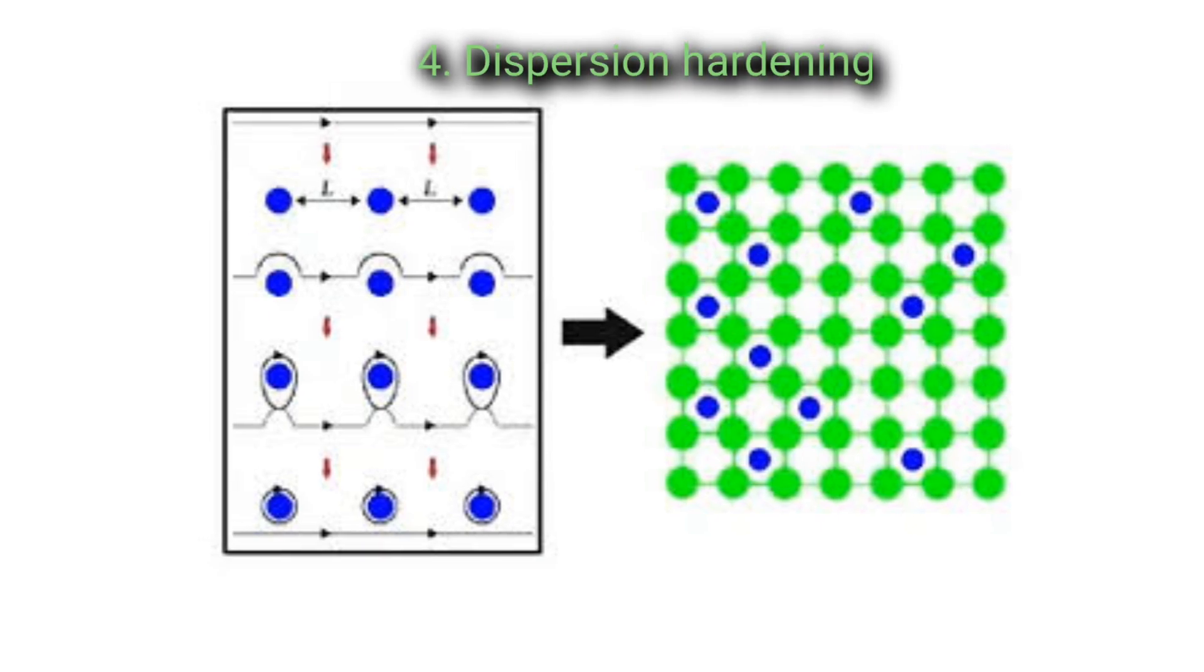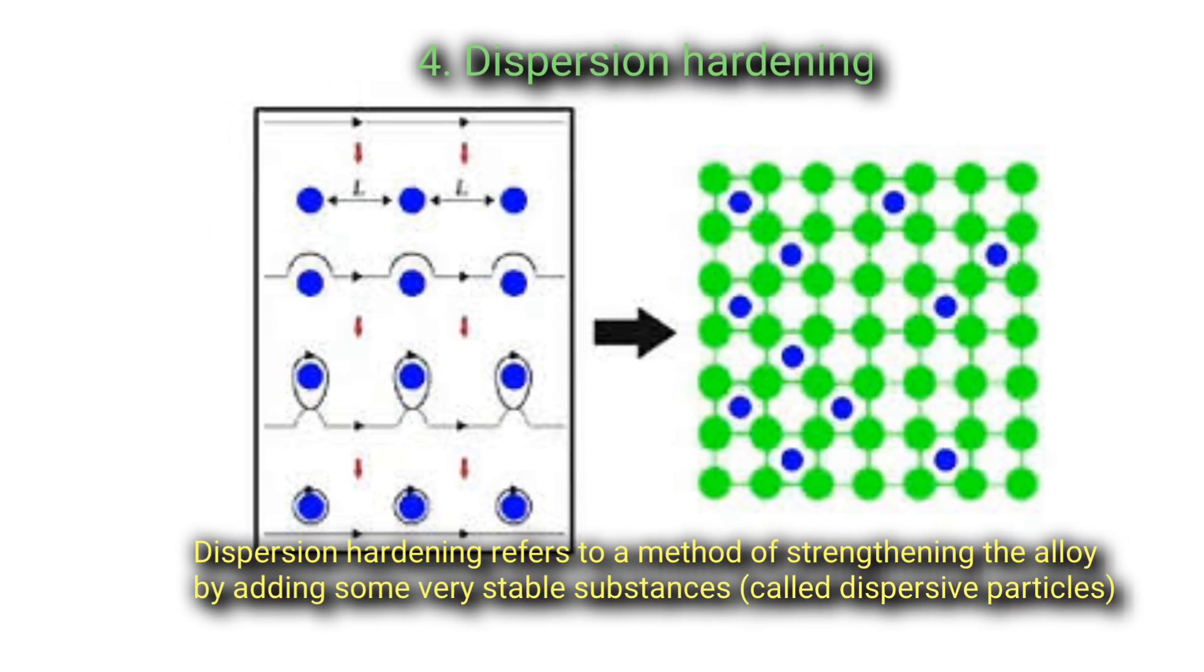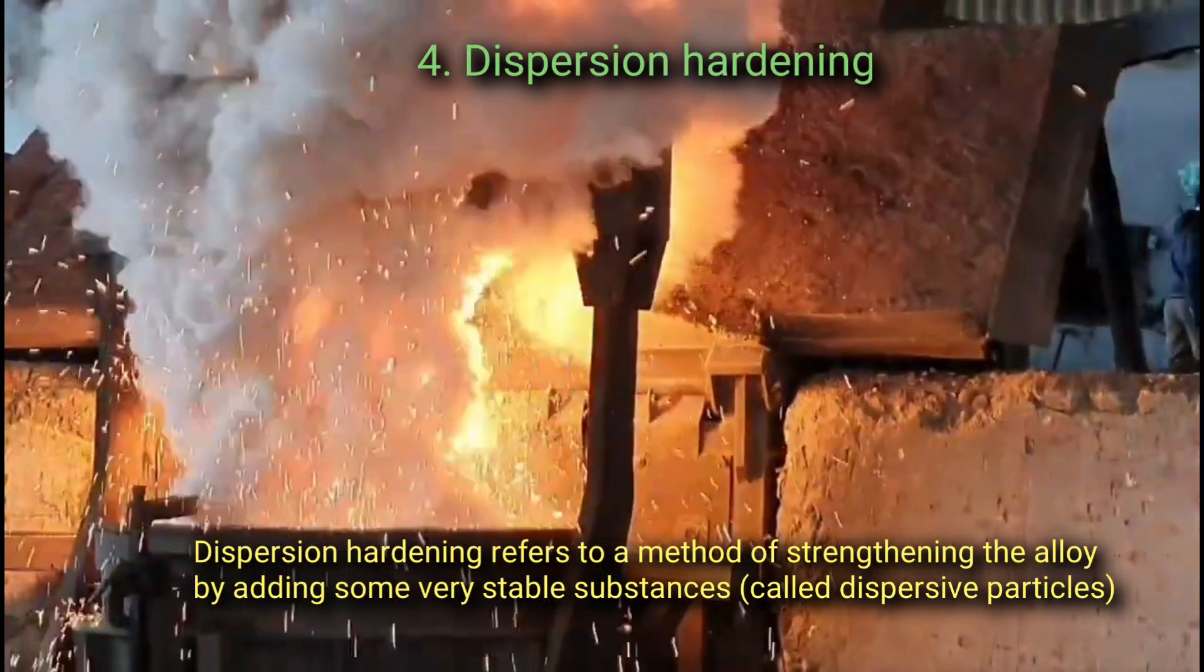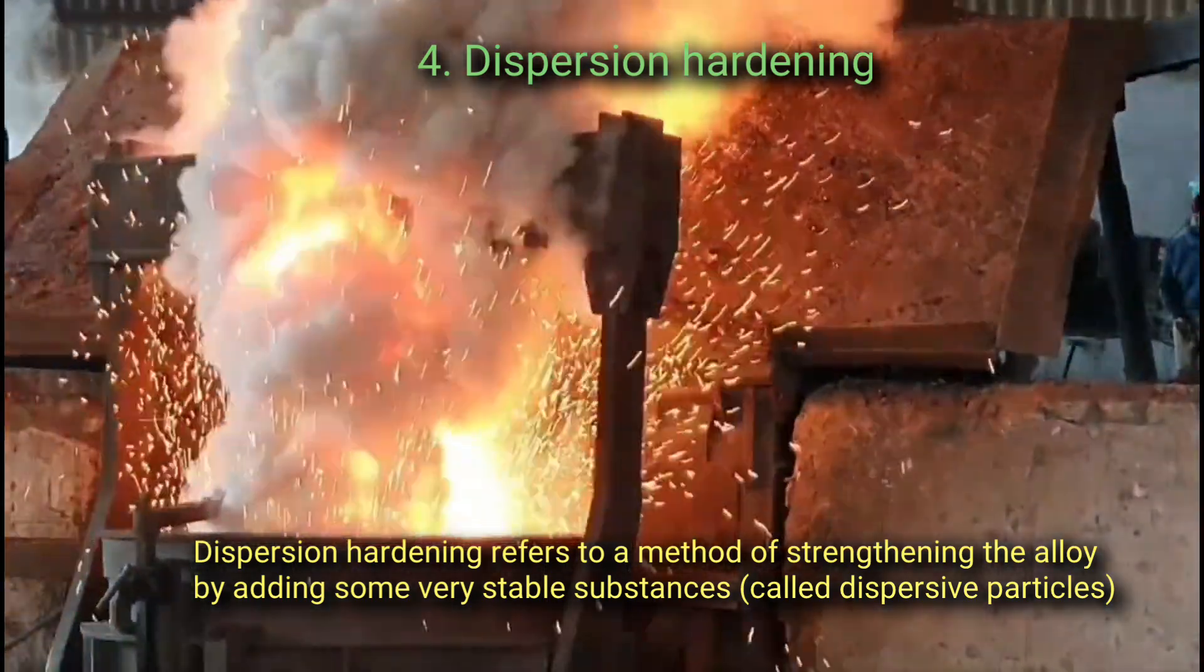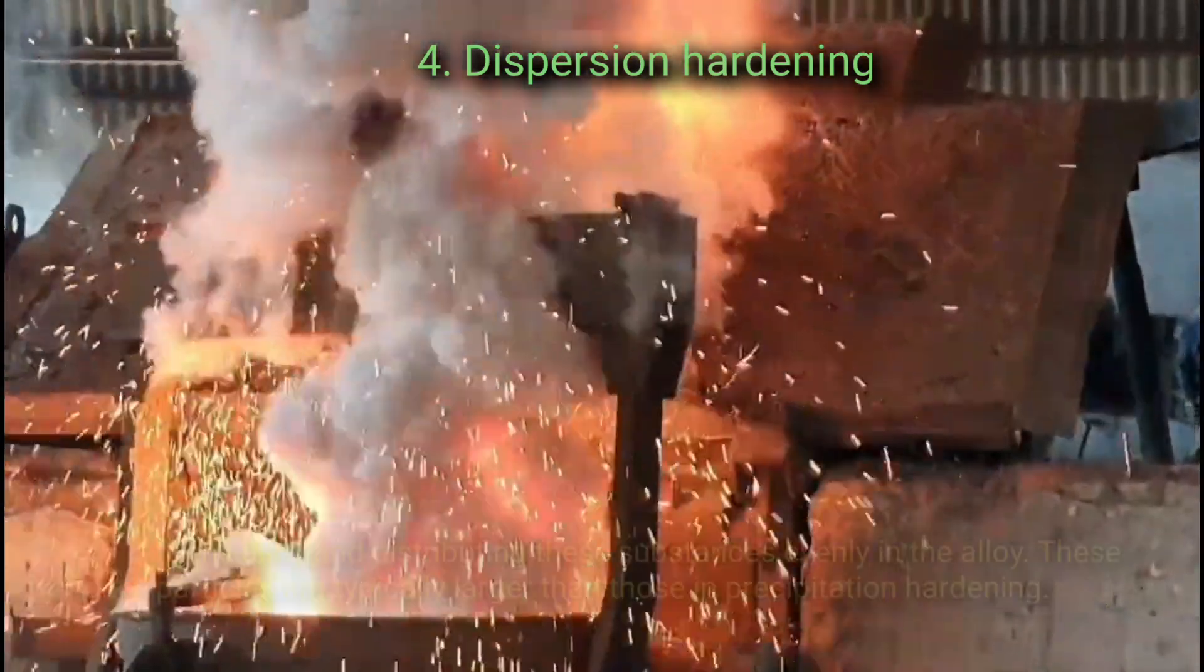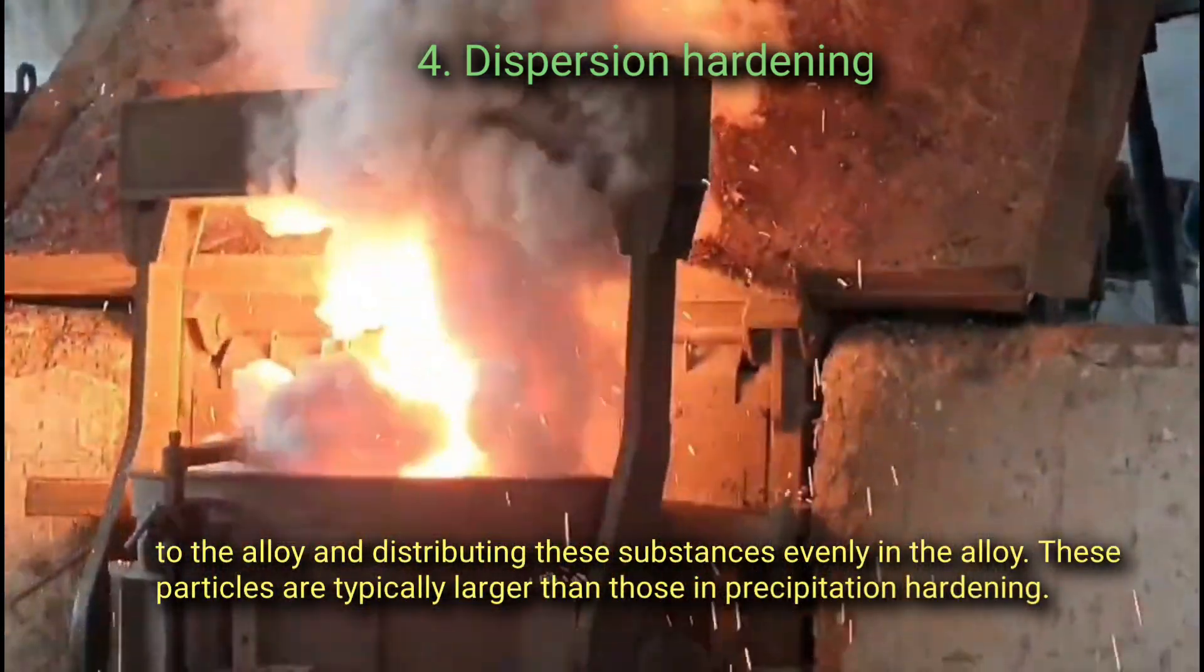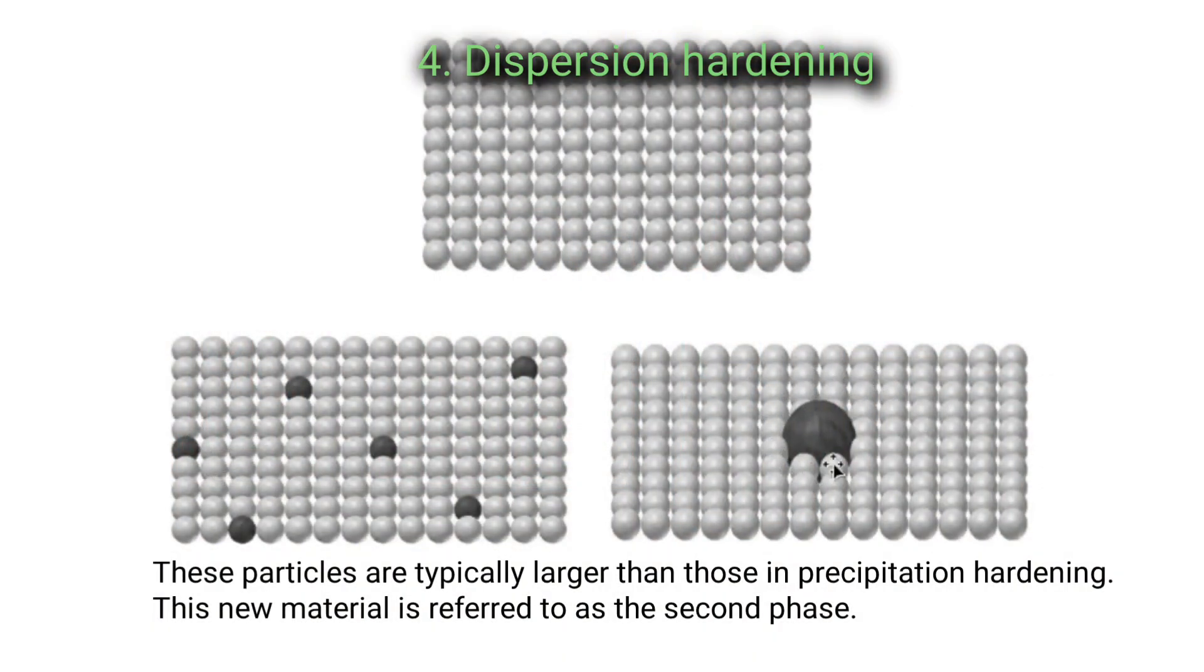Dispersion hardening: Dispersion hardening refers to a method of strengthening the alloy by adding some very stable substances called dispersive particles to the alloy and distributing these substances evenly in the alloy. These particles are typically larger than those in precipitation hardening.